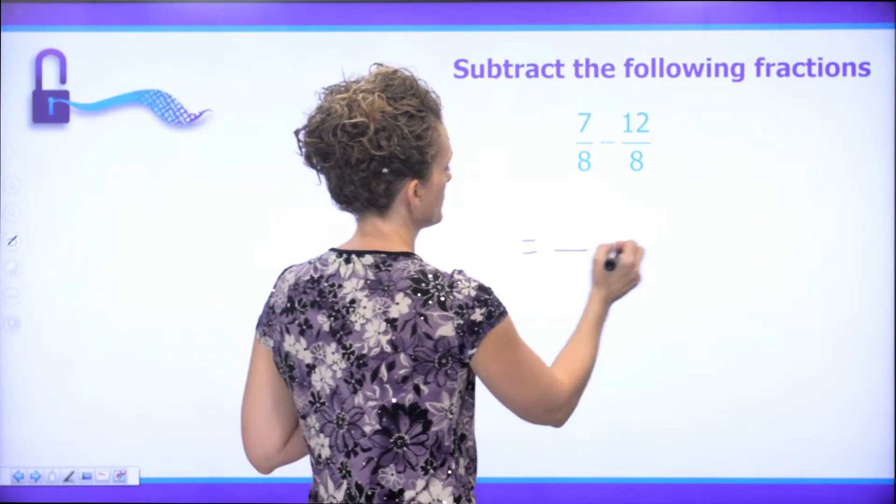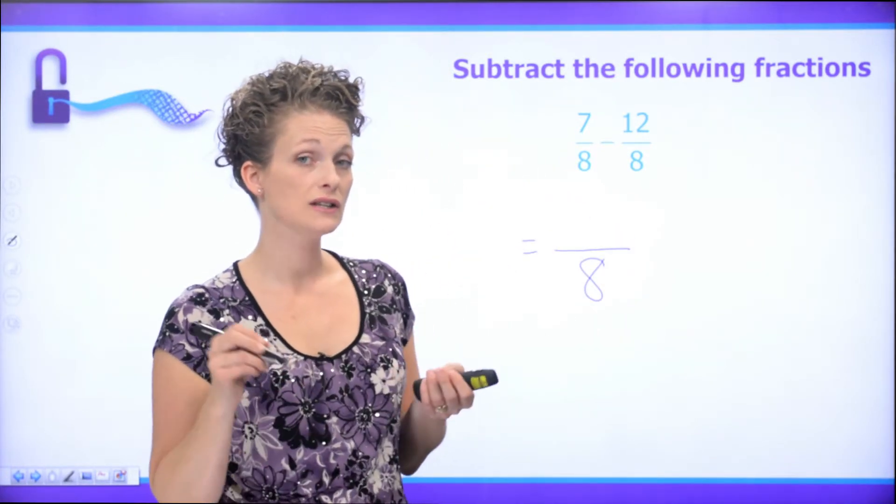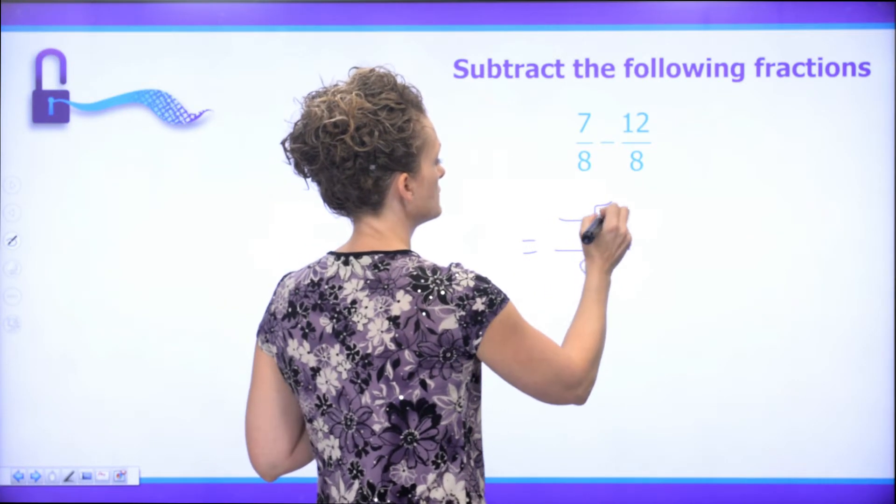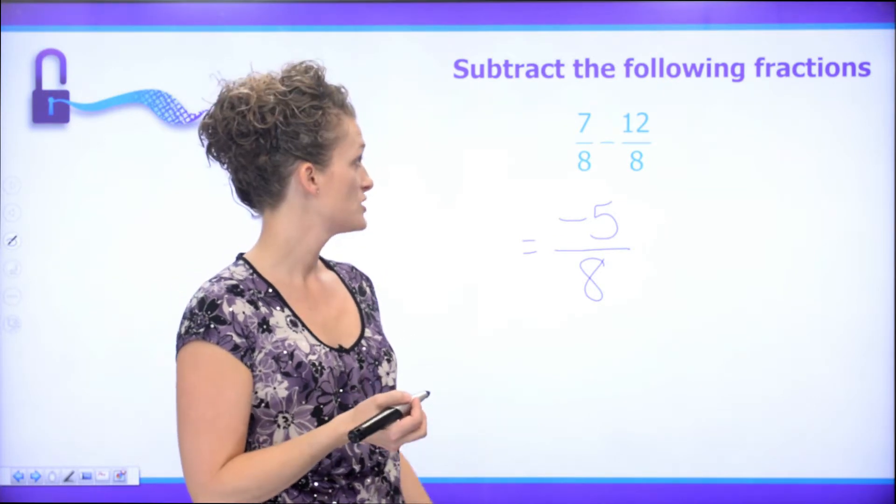which is 8. And go ahead and subtract 7 minus 12 - from our subtracting integers, we know that that is negative 5. And that is as simple as it will go. And so, we're done.